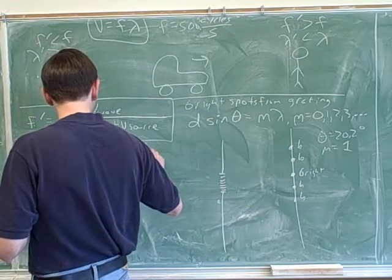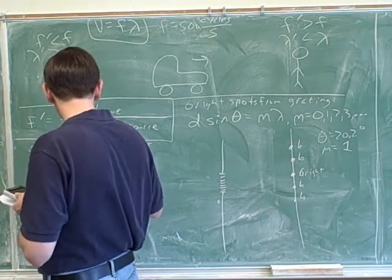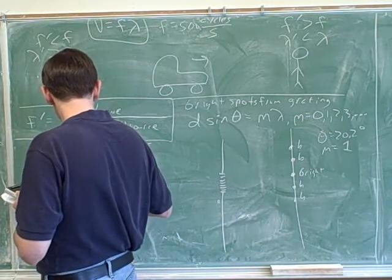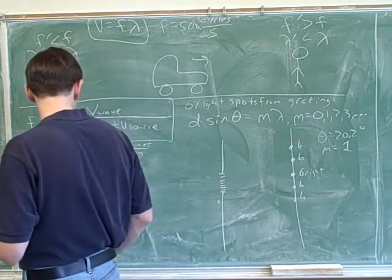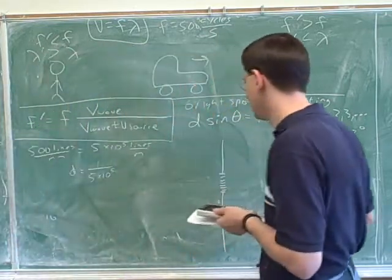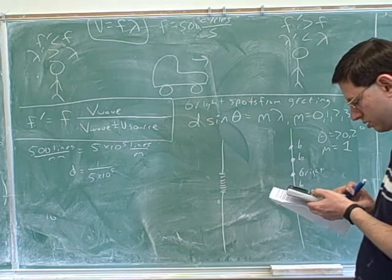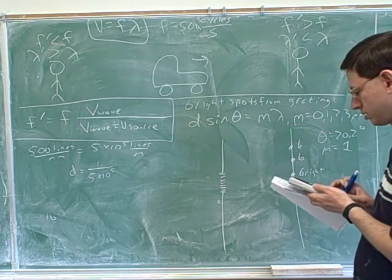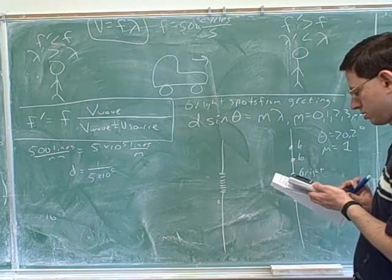So I can say one over five times ten to the fifth. Good. So we're going to say six point nine times ten to the negative seven. Okay.